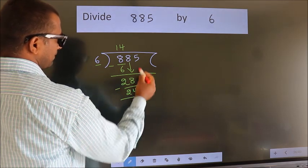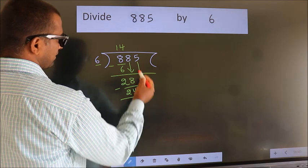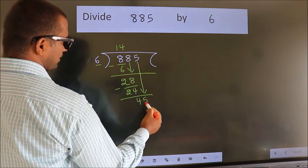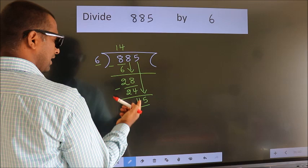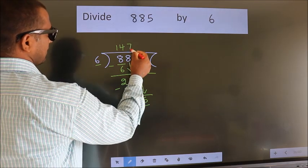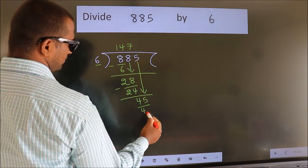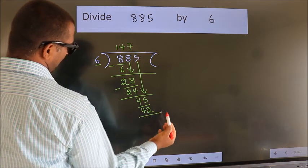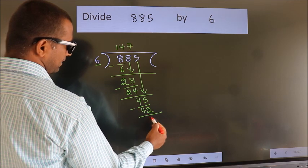After this, bring down the beside number. So, 5 down. So, 45. A number close to 45 in 6 table is 6×7=42. Now, we subtract. We get 3.